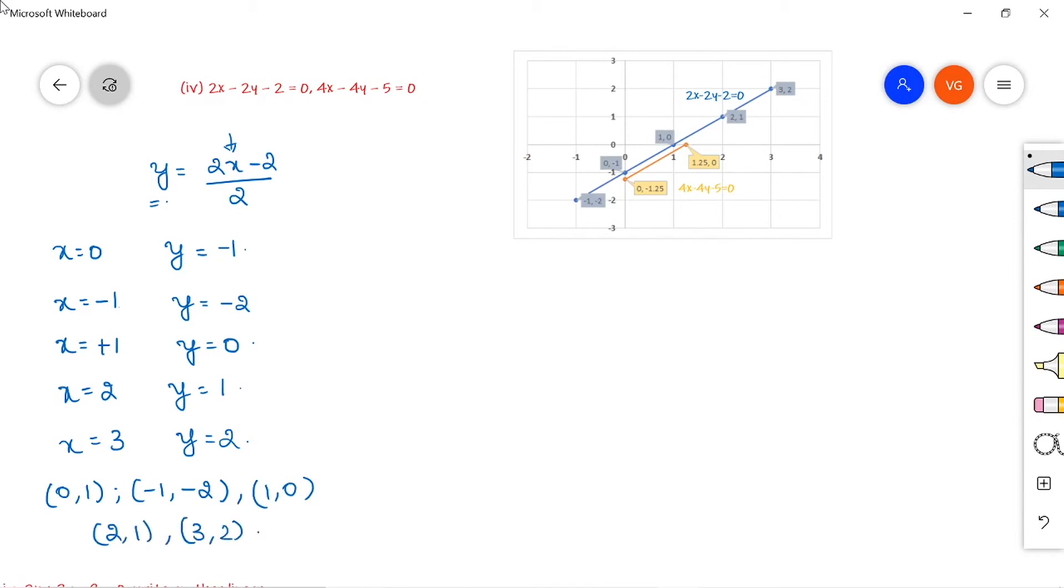From the second equation, we can write it as y equals 4x minus 5 divided by 4. For simplification, we can write it as x minus 5 by 4.